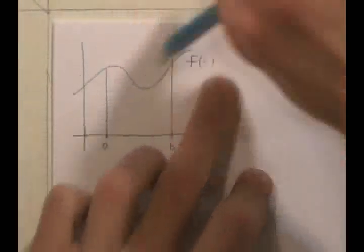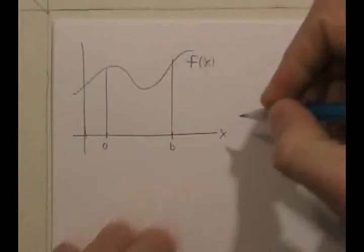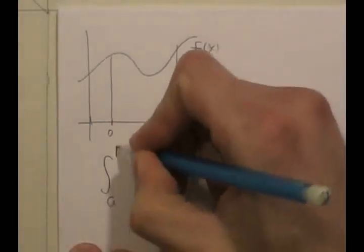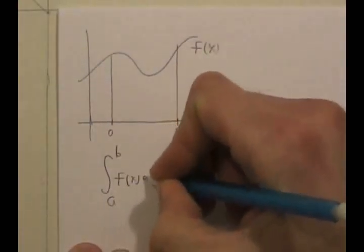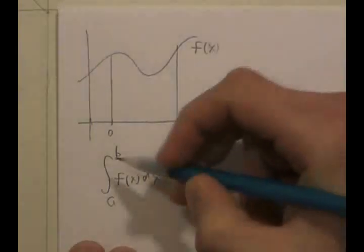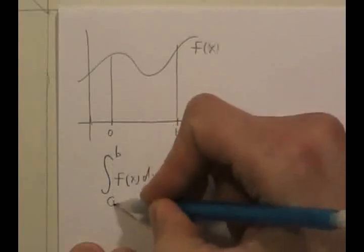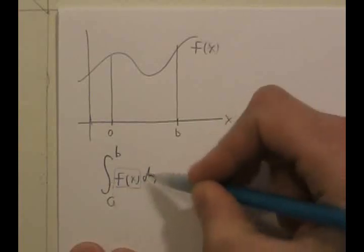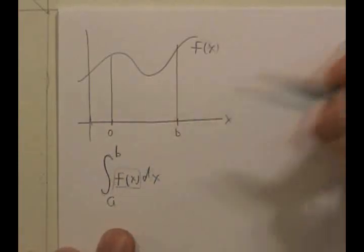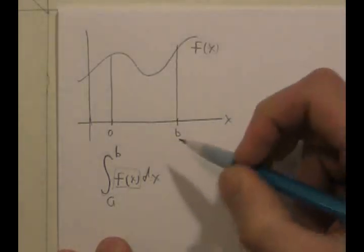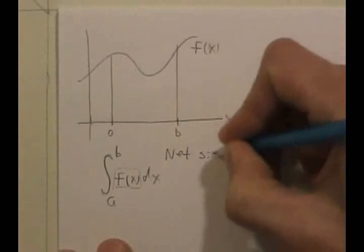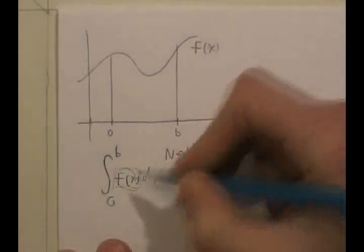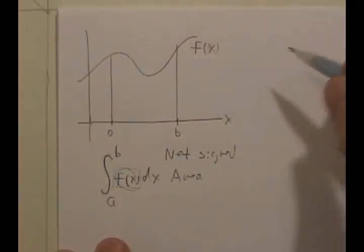First, we're going to start off with a bit of notation — just invented notation. It's going to be this symbol: an elongated S with an A down here, a B up here, some function on the inside, and a DX that just kind of goes along with this long S. This symbol refers to the net signed area between the curve F of X and the X axis. It is called a definite integral.